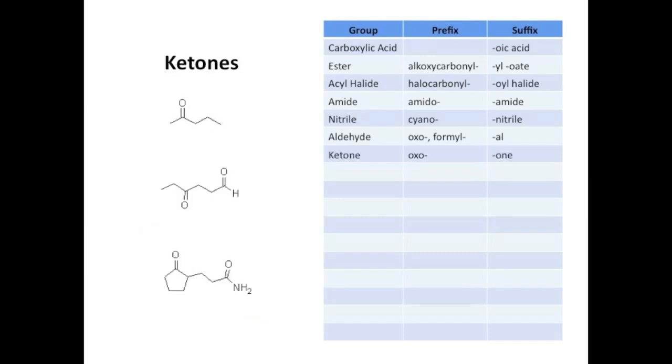Ketones are next. They are internal carbonyls and therefore don't get position 1, and are named with the suffix -one, making the first example 2-pentanone. Now you'll notice that ketones have the same prefix as aldehydes, oxo-. But keep in mind that due to being terminal, aldehydes are slightly more oxidized and do take priority over ketones. They're not tied. That makes the second example 4-oxohexanal.